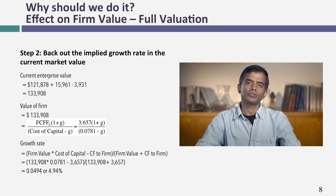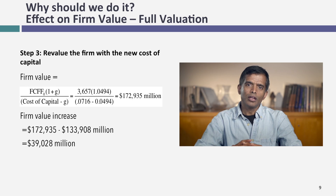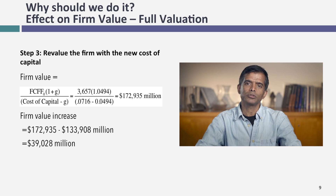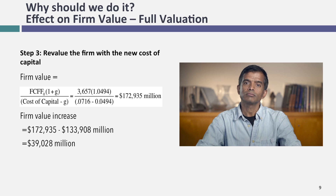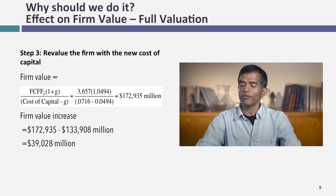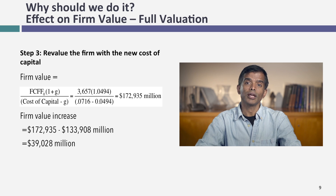If I continue to assume that 4.94% growth rate, keep the cash flows the same, and replace the 7.81% cost of capital with the 7.16% optimal, I get a new value for the firm of about $172.9 billion — effectively meaning that by moving to the optimal, I increase value by about $39 billion. But that seems too good to be true, and it probably is too good to be true.